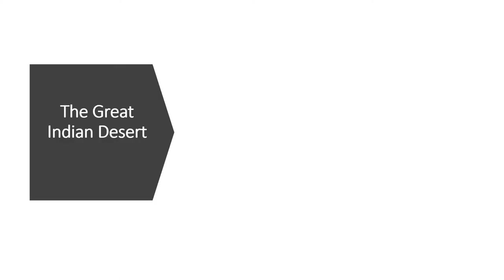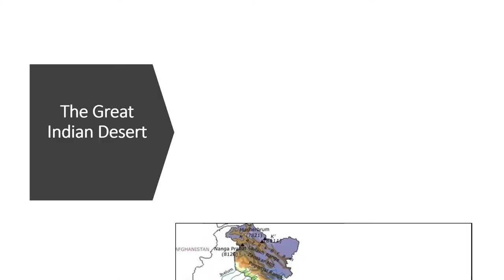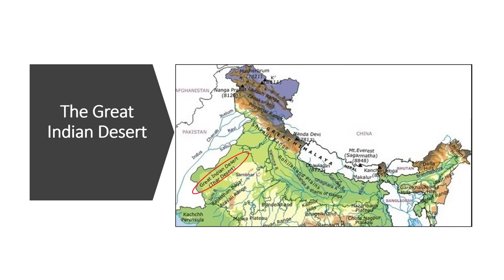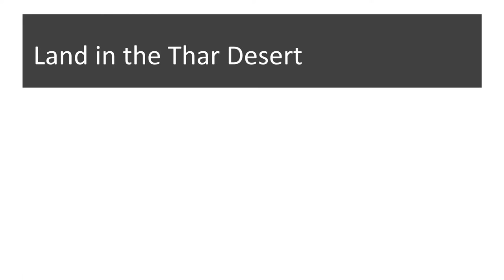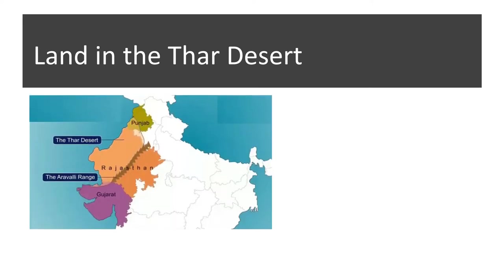The Great Indian Desert — the Thar Desert stretches from Rann of Kutch in Gujarat to the borders of Haryana. It is located towards the west of northern plains and is surrounded by the Aravali Hills towards the southeast. The Thar Desert covers mostly the western part of Rajasthan and is also known as the Western Desert.